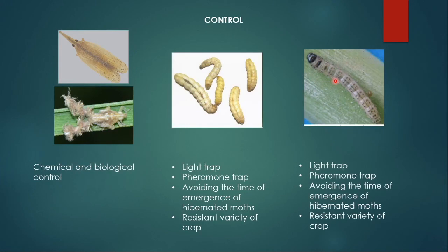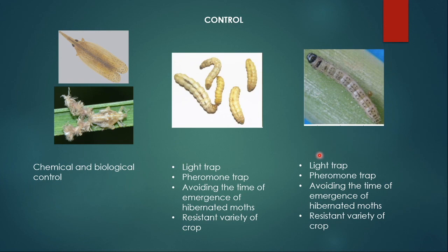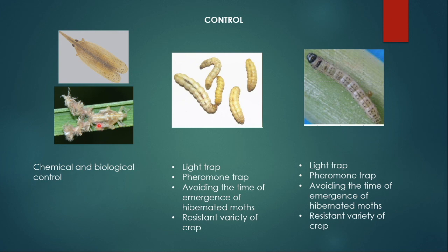Now let's talk about how we can control these three pests. For Pyrella purpusilla, we can use either chemical or biological control. Since these insects are seen outside the plant, chemicals can be used easily and biological control is also applicable. For the moths, we can use light traps and pheromone traps because moths are nocturnal and get attracted towards light. Males also get attracted towards female pheromones, so synthetically made pheromones in a trap can capture and kill the insects. Pyrella does not hibernate, so it is found throughout the year and cannot be controlled by adjusting the cultivation or harvesting period.